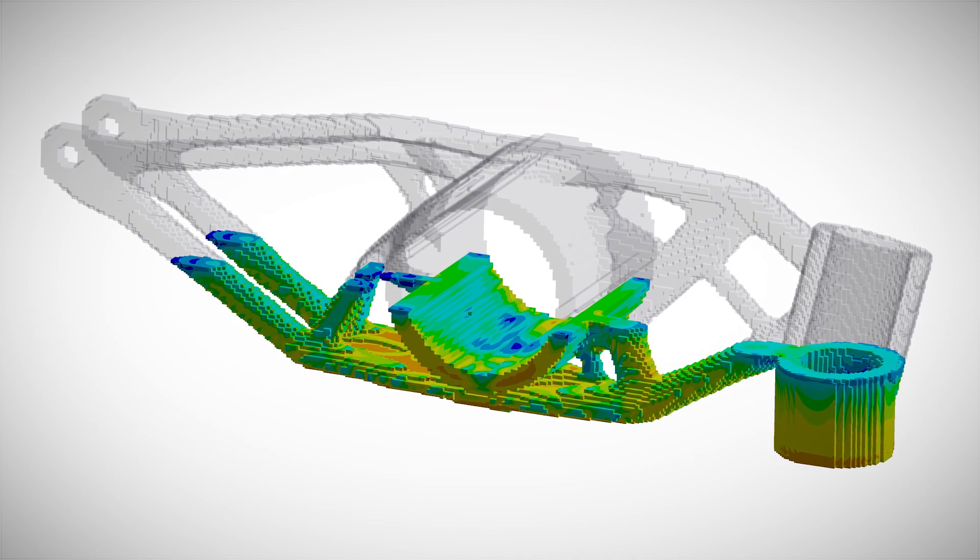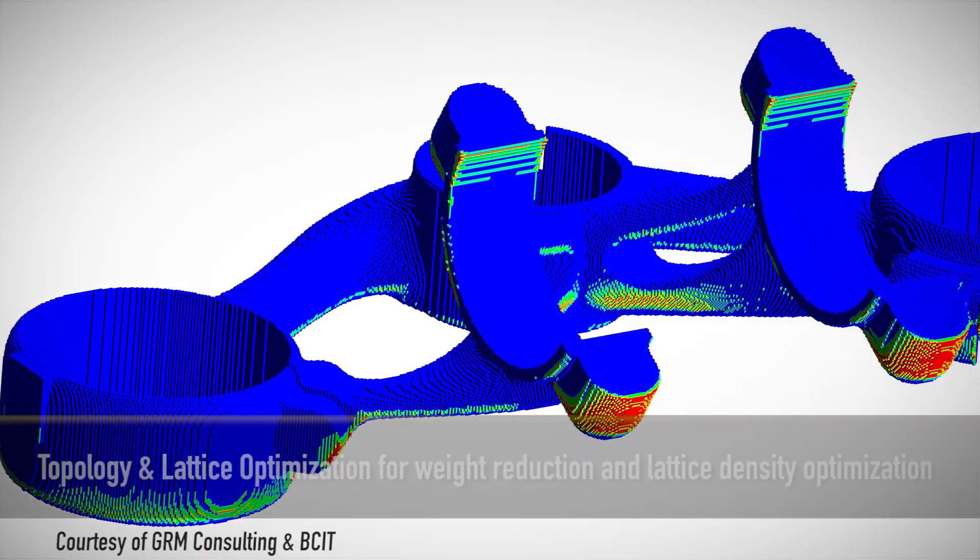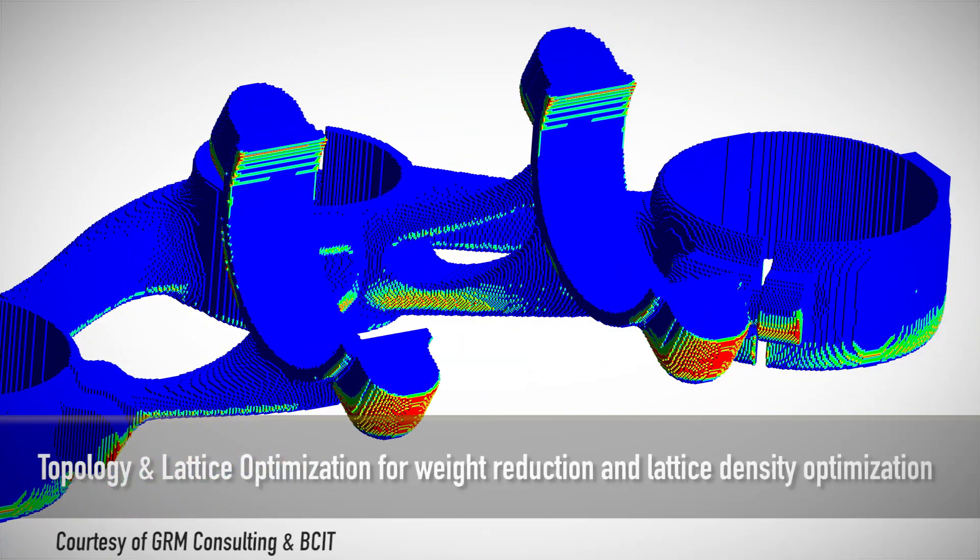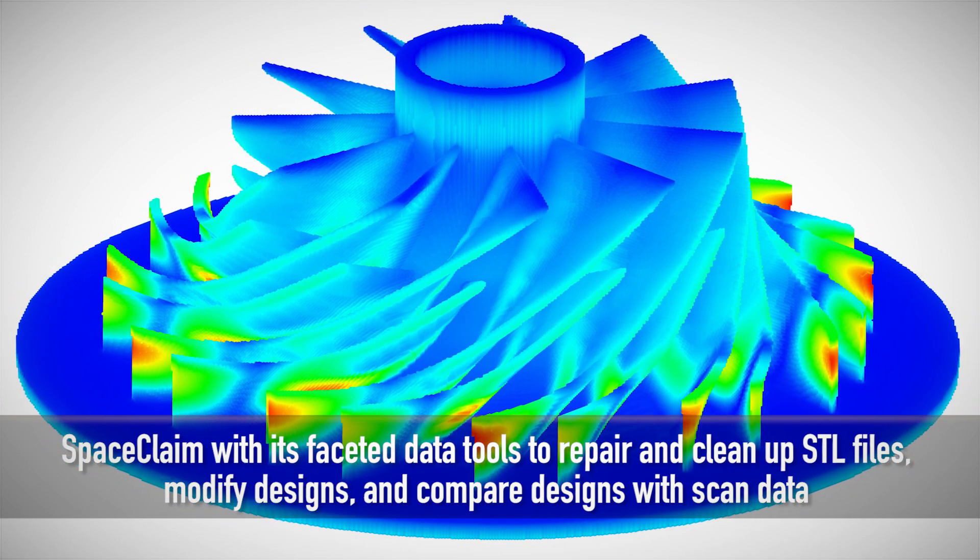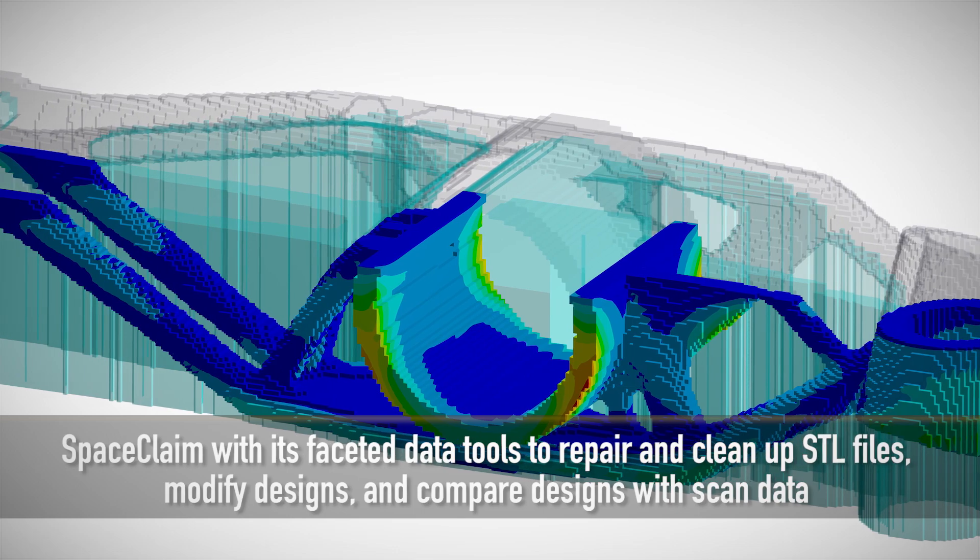The ANSYS Additive Manufacturing Suite includes a number of powerful tools: Topology and Lattice Optimization for weight reduction and lattice density optimization, SpaceClaim with its faceted data tools to repair and clean up STL files, modify designs, and compare designs with scan data.